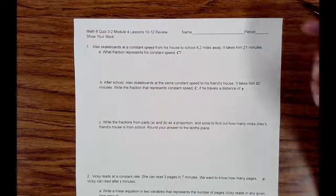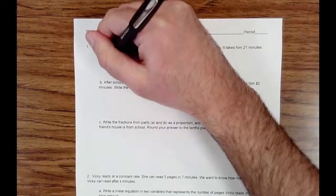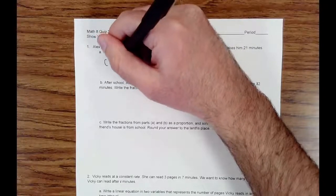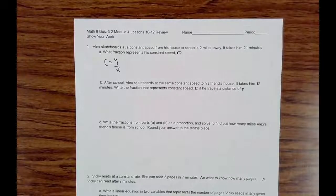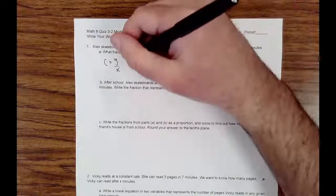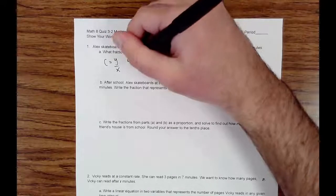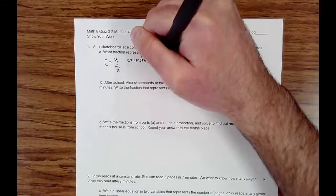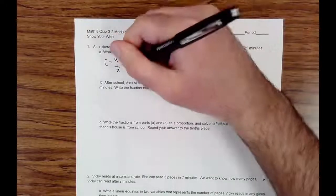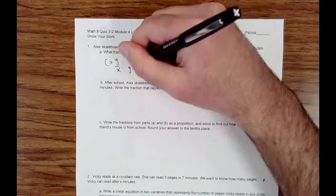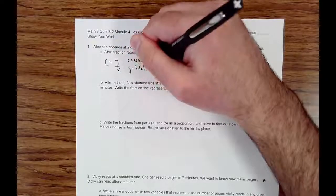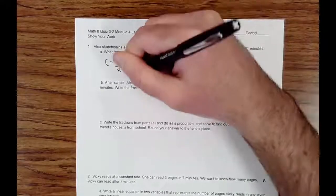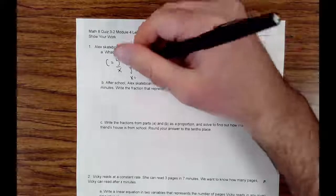So when we're looking at constant speed, the fraction you're looking at is C is equal to Y over X. And in this equation, C is equal to constant speed. Y is the distance traveled, the total distance traveled, and X is the given time interval.